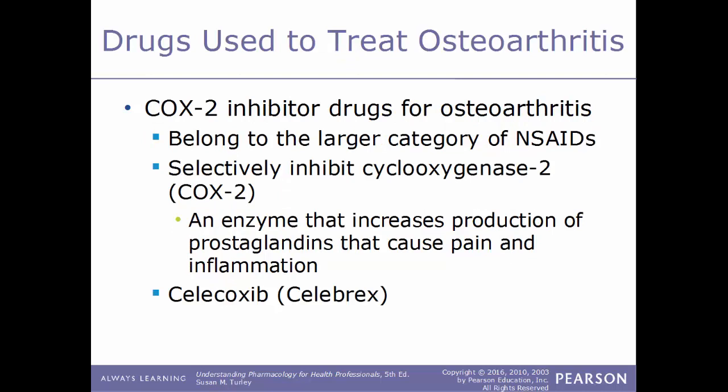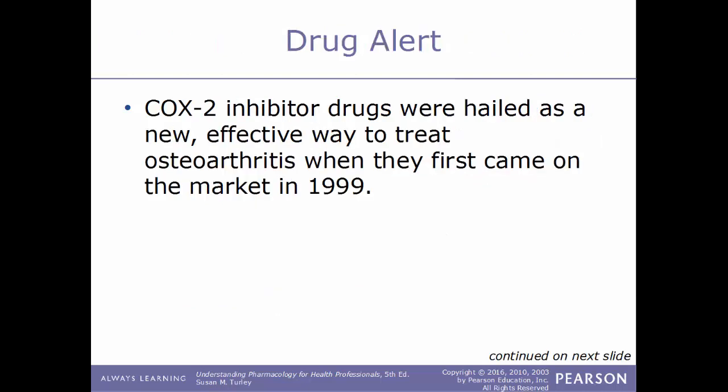Another kind of drug used to treat osteoarthritis are the COX-2 inhibitor drugs. These belong to the larger category of NSAIDs and act by selectively inhibiting cyclooxygenase-2, or COX-2 — an enzyme that leads to increased production of prostaglandins, which eventually cause pain and inflammation. By inhibiting this enzyme, inflammation and pain are reduced. A good example is celecoxib, known by its trade name Celebrex.